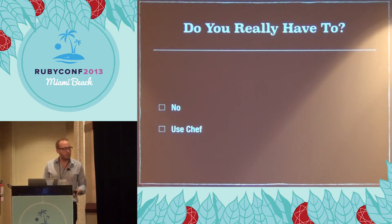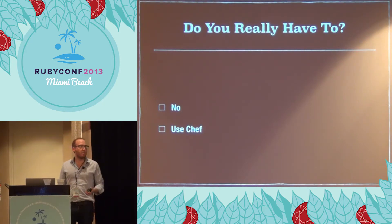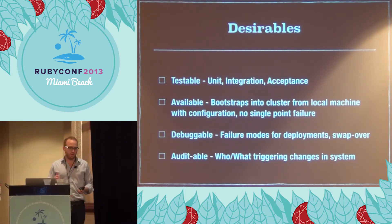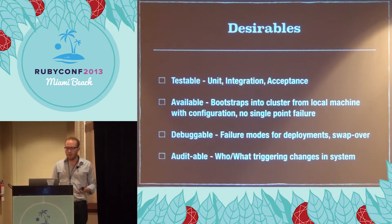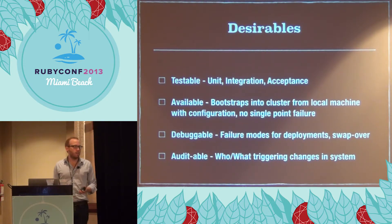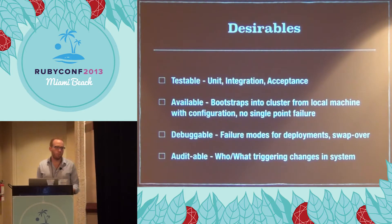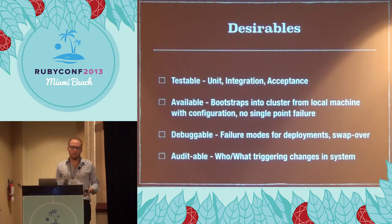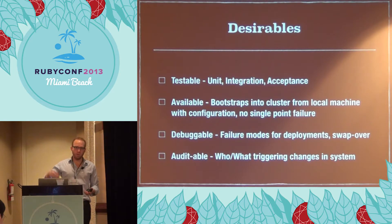We're using Chef. The problems we're trying to solve are: we want something that is very testable — that is our first key desirable. We need to be able to test things rapidly at the unit level, then integrate it. And the biggest area of testing is acceptance testing. We want to have our framework bring up real machines and make assertions about the state of those machines.